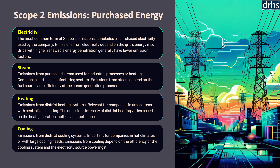The American Council for Energy Efficient Economy emphasizes the importance of energy-efficient cooling systems in reducing overall energy consumption and associated emissions. The United Nations Environment Programme states that district cooling can significantly reduce energy consumption and associated emissions compared to individual cooling systems. Addressing scope 2 emissions is essential for organizations committed to sustainability. By understanding the sources — electricity, steam, heating, and cooling — companies can implement strategies to reduce their carbon footprint.